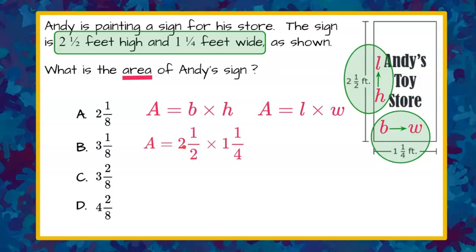So 2 times 2 is 4, plus 1 is 5, so that makes 2 1⁄2 equal to 5 halves. 1 1⁄4, 4 times 1 is 4, plus 1 is 5, so 1 1⁄4 becomes 5⁄4 as an improper fraction.